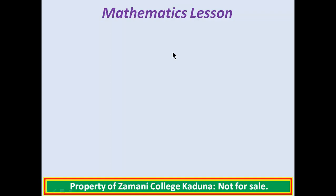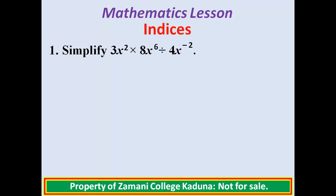Mathematics lesson on indices. We have our first problem: simplify 3x raised to power 2 times 8x raised to power 6, divided by 4x raised to power negative 2.